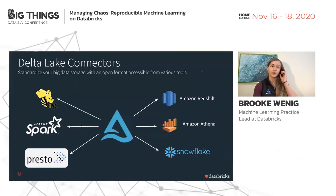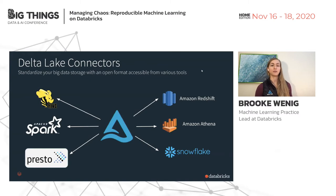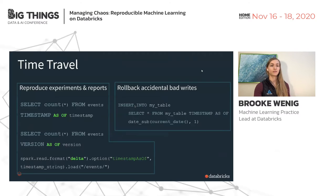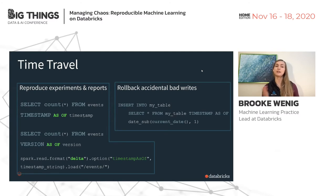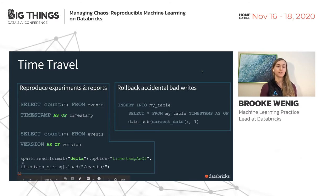Delta Lake comes with many different connectors. For the demo we'll be using Spark, one of the other open source projects Databricks contributes to, but you can access Delta from many other sources. For the time travel syntax, you write standard SQL: SELECT COUNT(*) FROM events TIMESTAMP AS OF [timestamp], or as of a specific version. There's also a Python and Scala API.